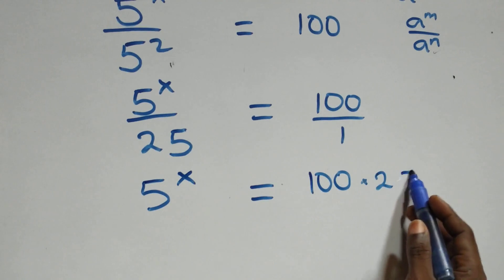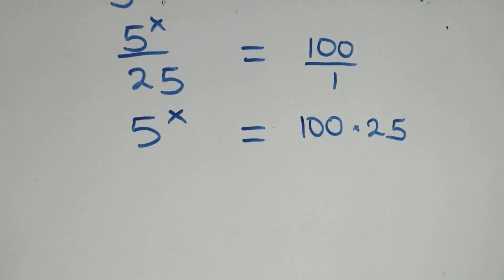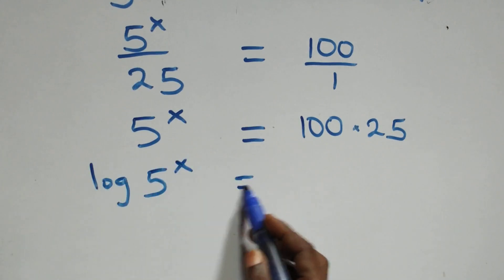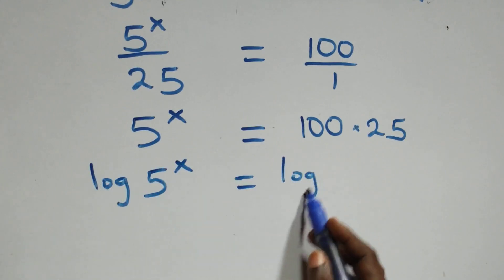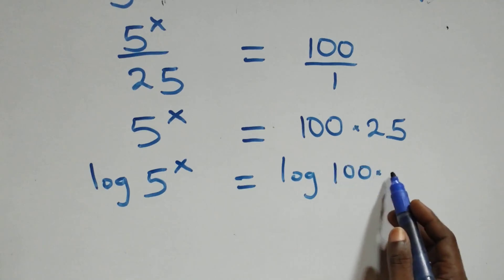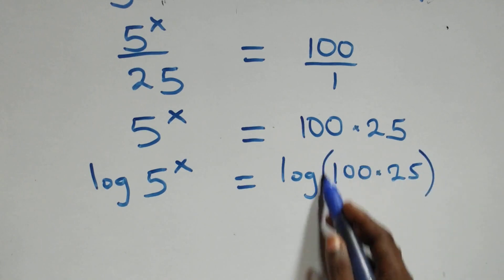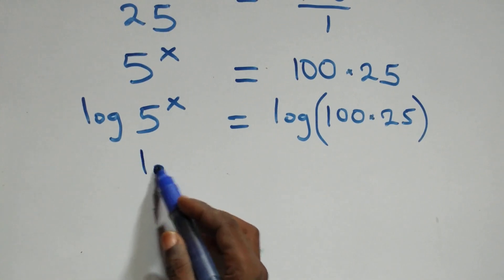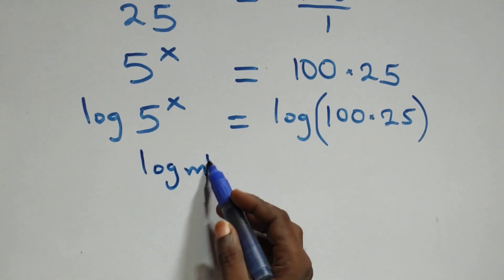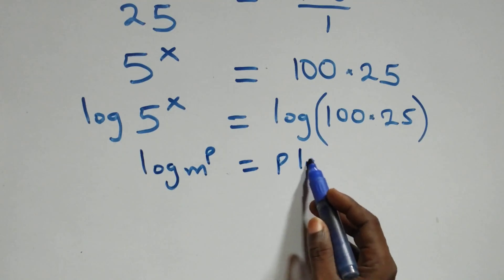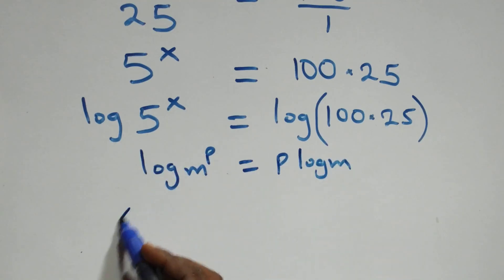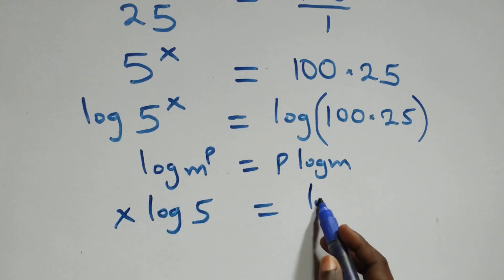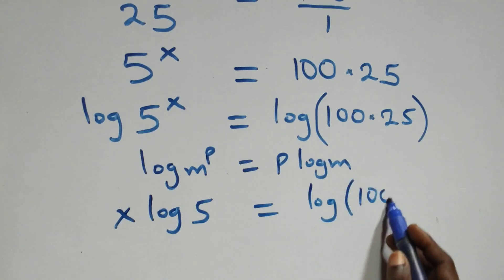Then from here we take the log on both sides. We have log of 5 raised to power x equals to log of 100 times 25. We then apply the power rule of logarithms: log m raised to power p is the same as p times log m. So what we have here becomes x times log 5 equals to log of 100 times 25.